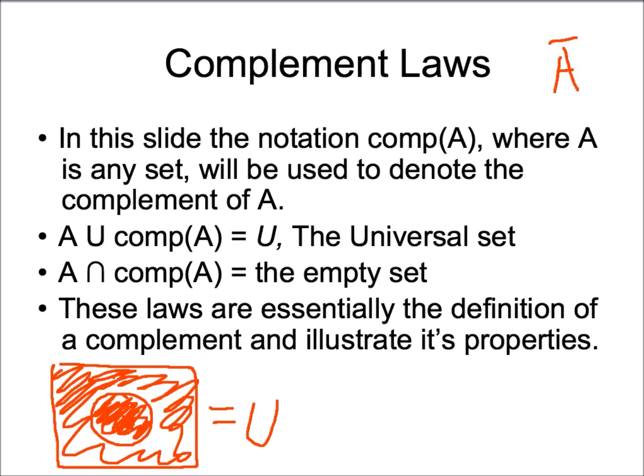The second complement law states that the intersection of A and complement A is the empty set. We have set A and the complement of A, which is everything else. The intersection of complement A and set A is when those two sets share the same elements, but since there are no elements that intersect, it is equal to an empty set.